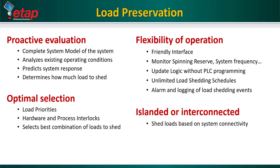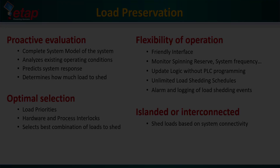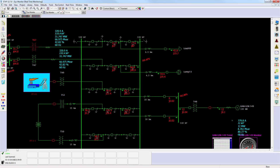The key of an intelligent load shedding system is understanding the electrical network. If this is covered, the load shedding system will be able to accurately predict system response and therefore be prepared for transient and steady-state disturbances. In ETAP ILS, this is achieved by the system model, which is represented by a one-line diagram of the system — the same model utilized by electrical engineers on-site and consultants performing system analysis.